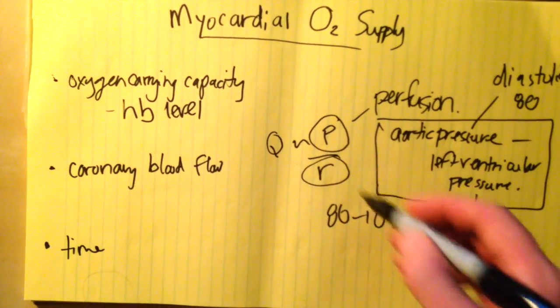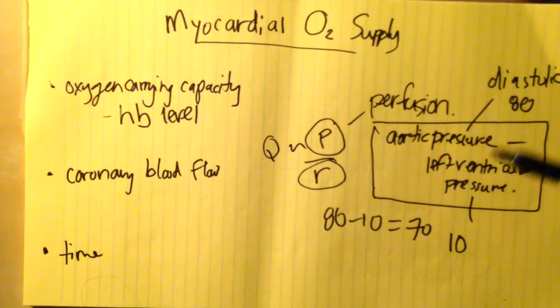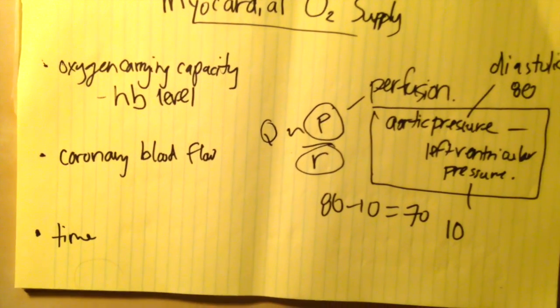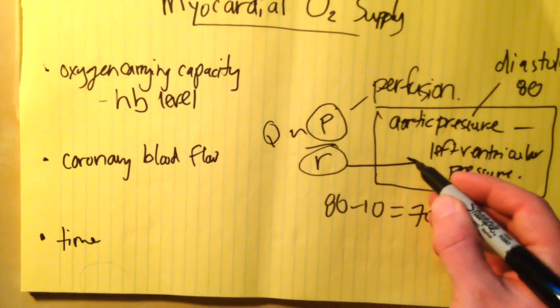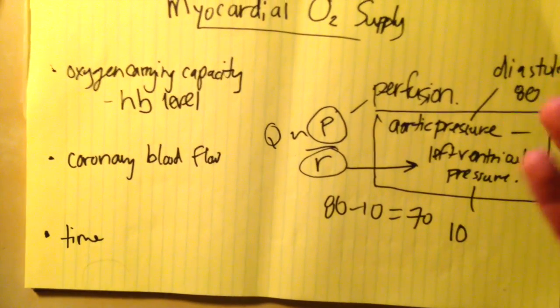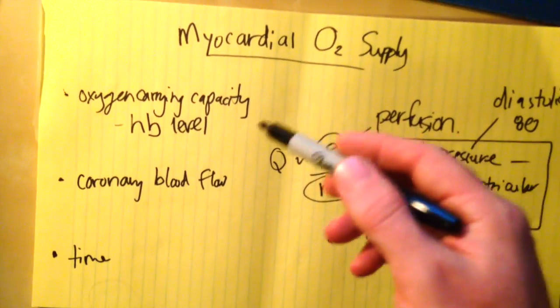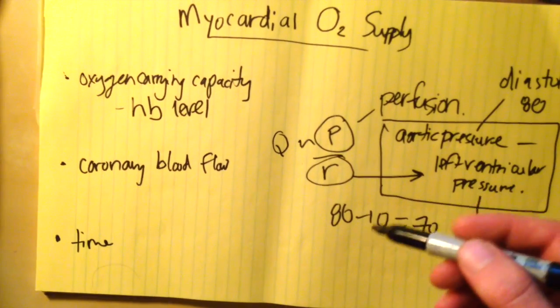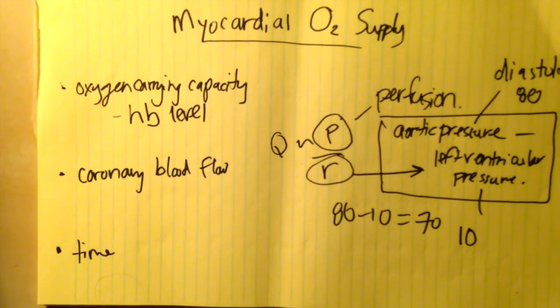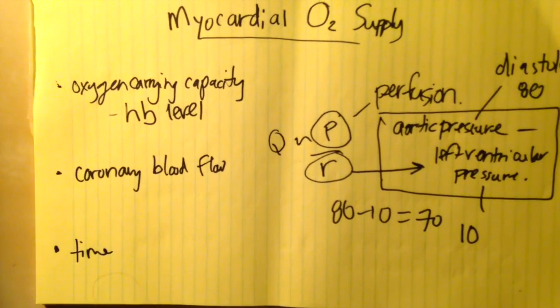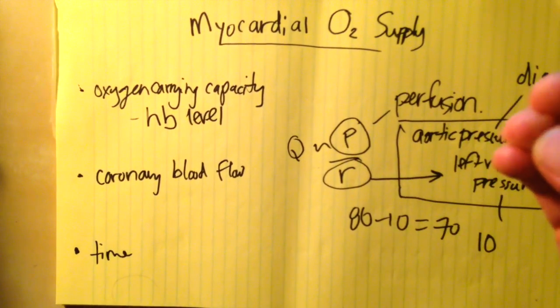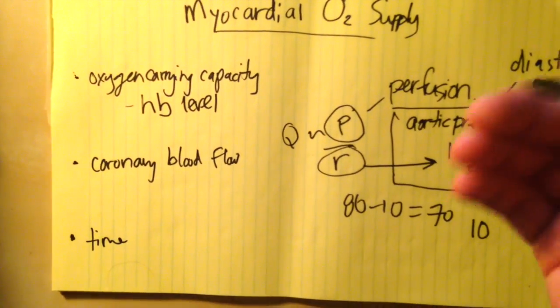Resistance is another factor, and this explains why we only perfuse our coronary arteries during diastole. During systole, when the ventricle is contracting, left ventricular pressure goes up and the resistance to flow increases to the point where those vessels are essentially squeezed off and there's no blood flow. There are also intrinsic vascular factors that can result in constriction, but the key point is that the diameter or radius of the coronary vessels can affect resistance.